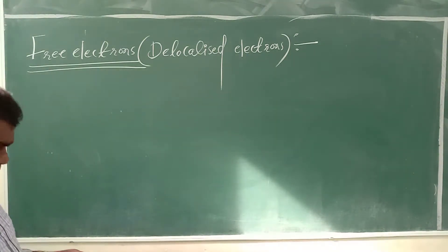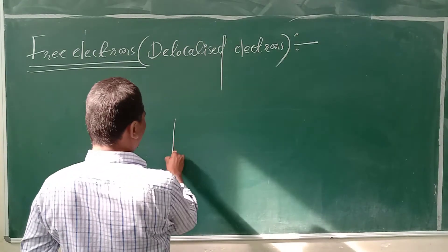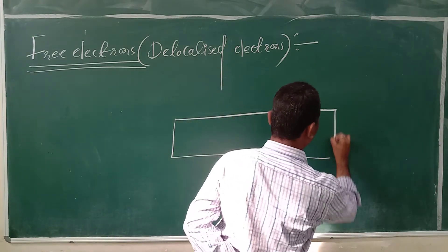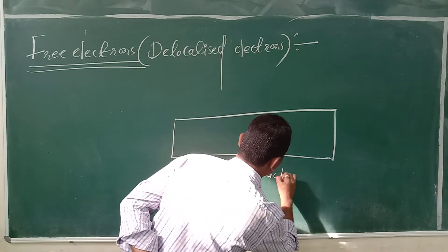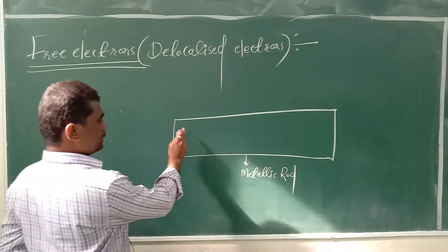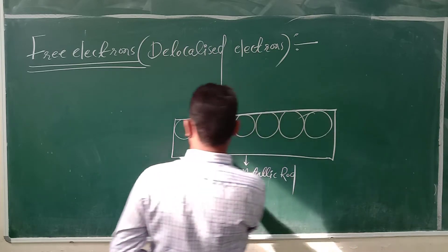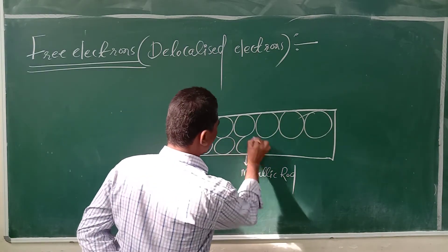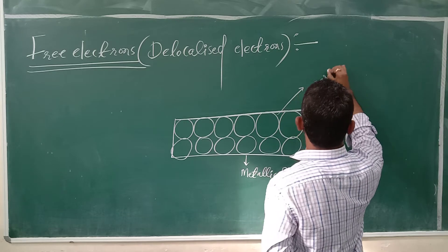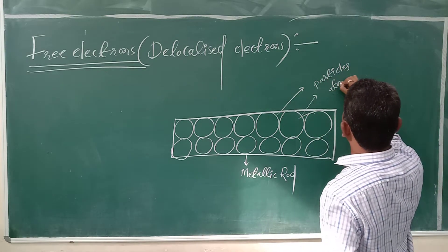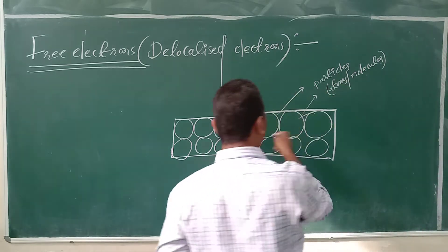Hi students, now we are going to discuss about free electrons or delocalized electrons. Here, one metallic rod is here — this is one metallic rod. In this metallic rod, these are all the particles of the metallic rod — atoms or molecules in the metallic rod.